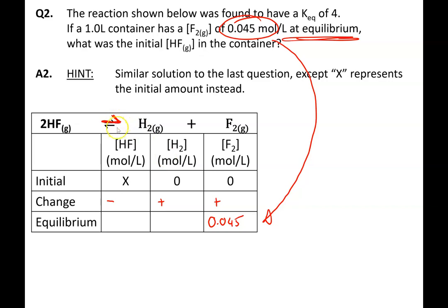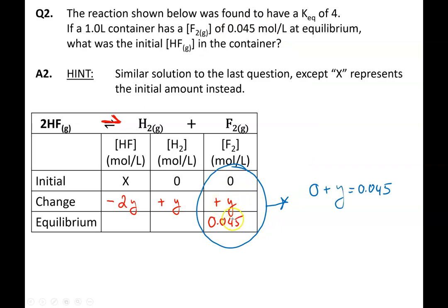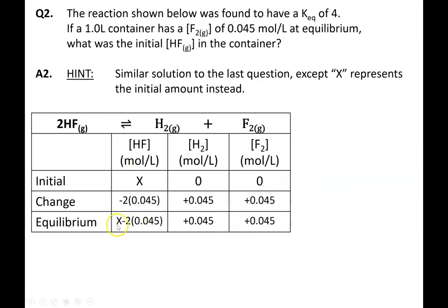If you read carefully, the fluorine concentration of 0.045 moles per liter is stated at equilibrium — students who don't read carefully will mistakenly put it in the initial row. Because it says at equilibrium, 0.045 belongs in the equilibrium row. There are no products initially, so the reaction must move forward. HF is being used up (negative), while hydrogen and fluorine are being produced (positive). I let y represent the change in concentration, respecting the 2 to 1 to 1 stoichiometric ratio.